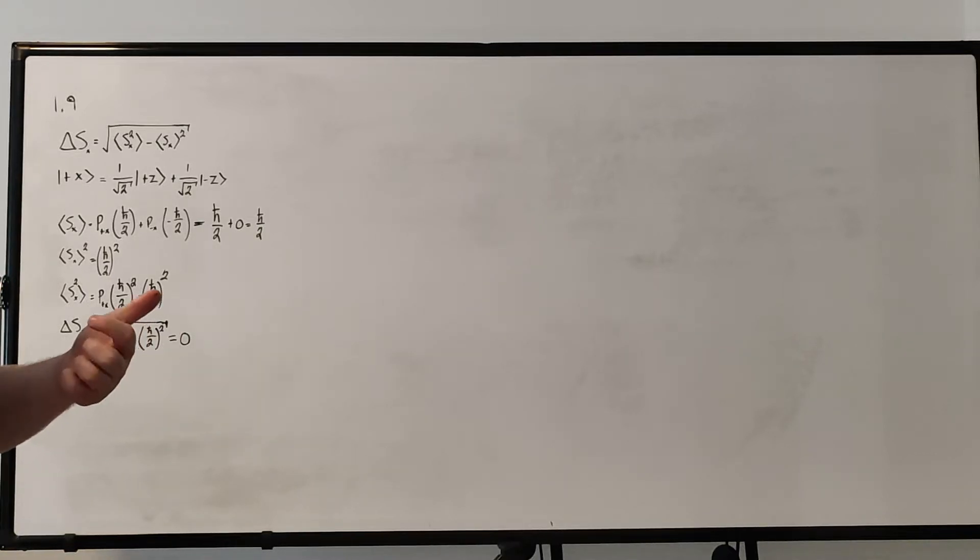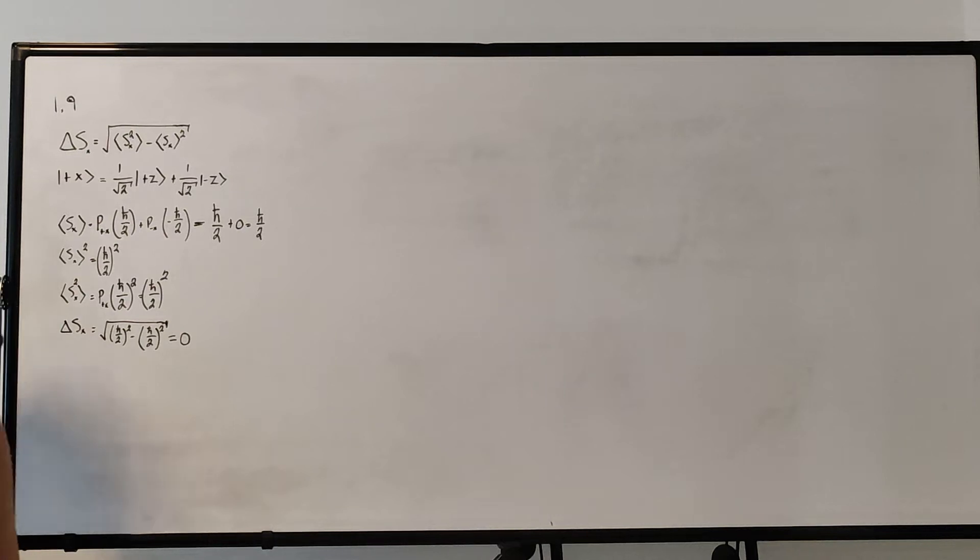So if you're watching this video, I assume you have the book. This is problem 1.9 on page 27, and basically what it asks us is to verify that the uncertainty of the x component of spin is 0 for the state plus x.